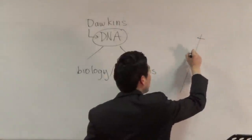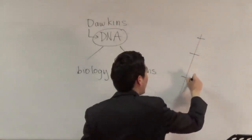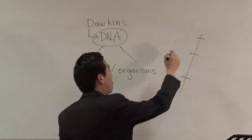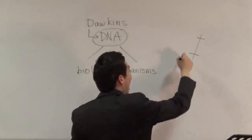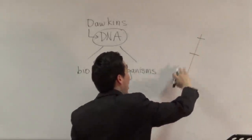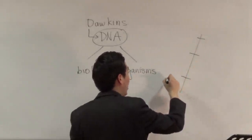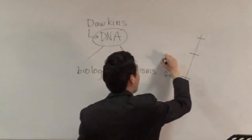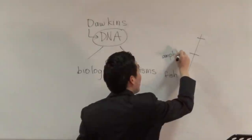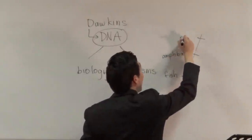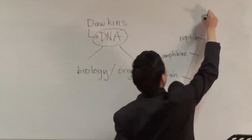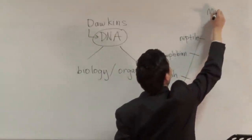This is totally hypothetical, but basically they have a tiered structure of animals: fish, then amphibian, then reptile, then bird, and then eventually man — monkey.